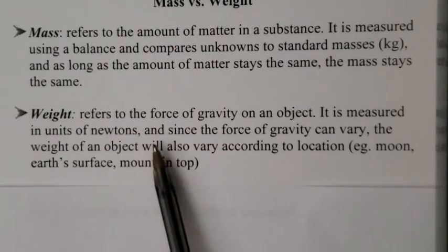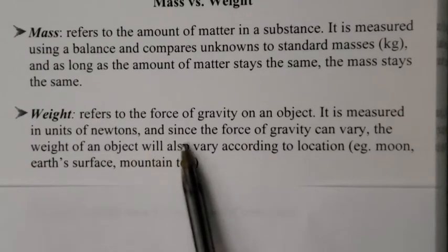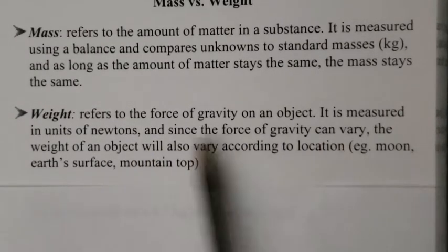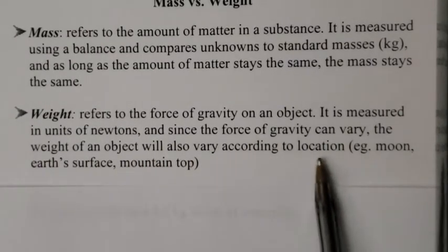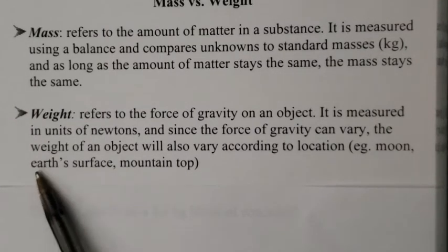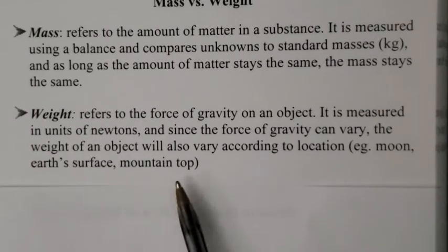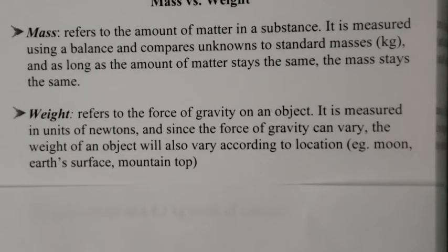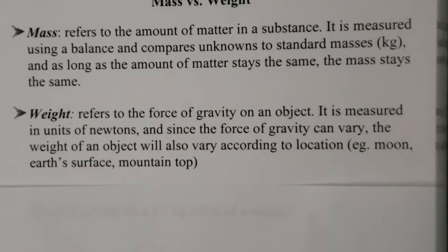So weight refers to the force of gravity on an object. It's measured in a unit called Newtons. And we use this formula up top, which is force equals mass times gravity. Since the force of gravity can vary, the weight of an object will also vary according to its location. Example, the moon, Earth's surface, a mountaintop. The further we get away from the center of the Earth, the smaller the force of gravity is. And you actually do weigh less on the mountaintop than you do at sea level.